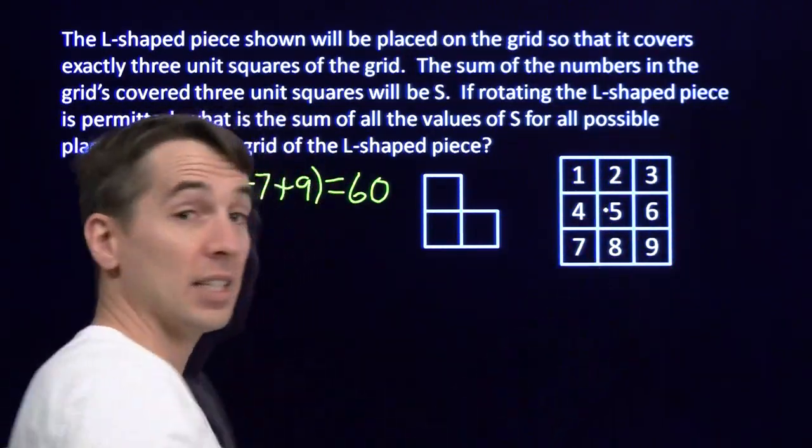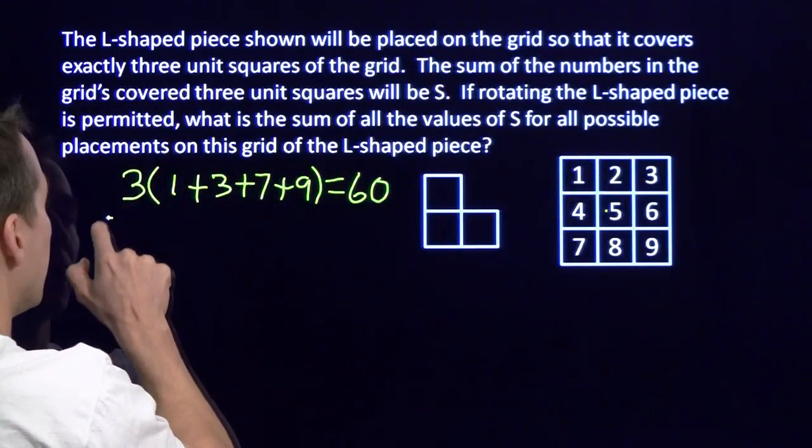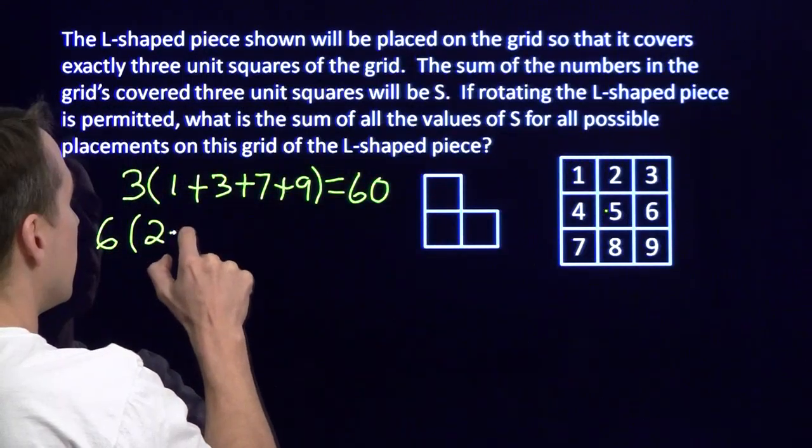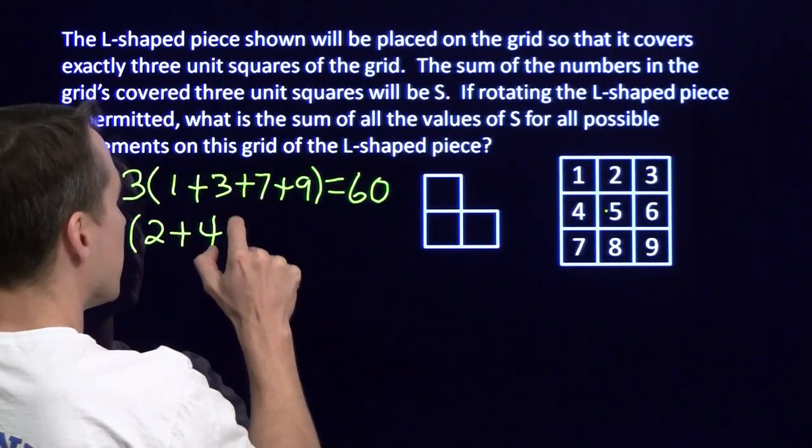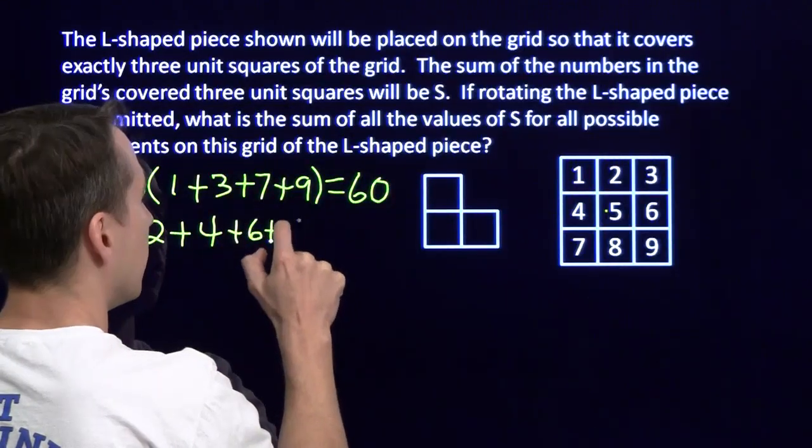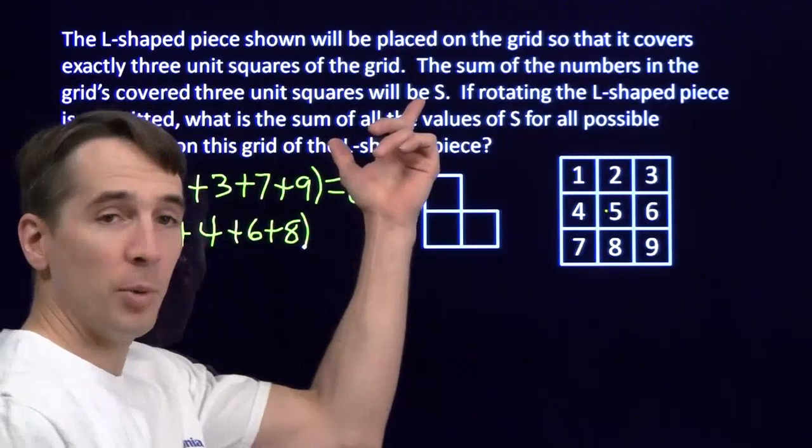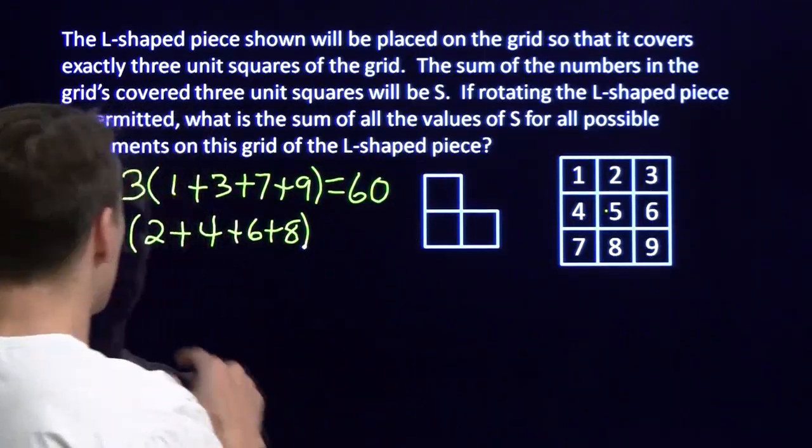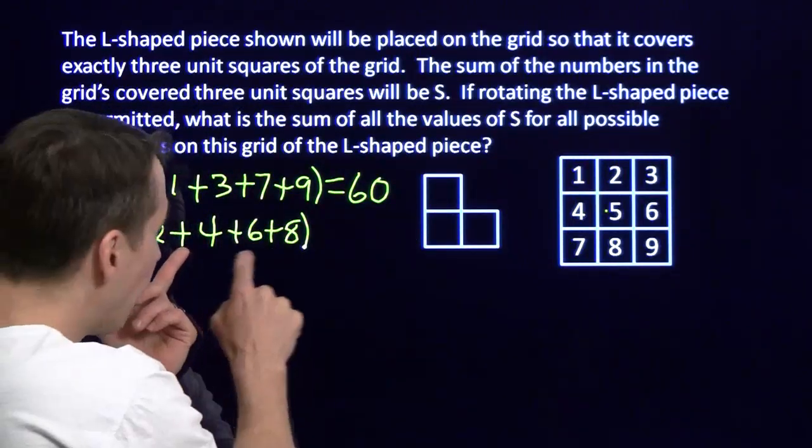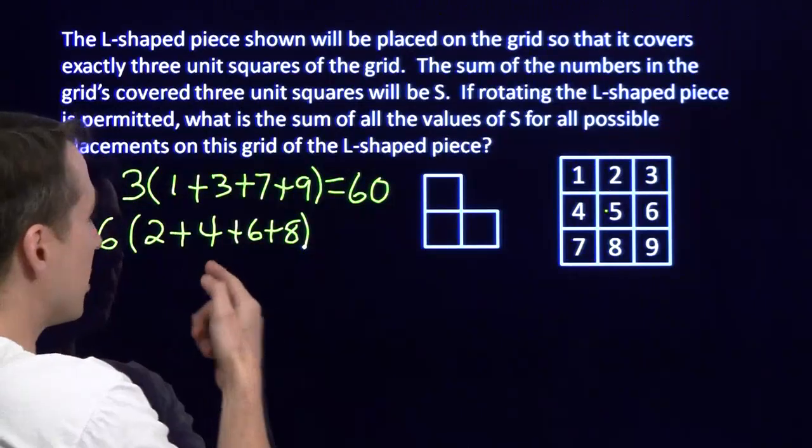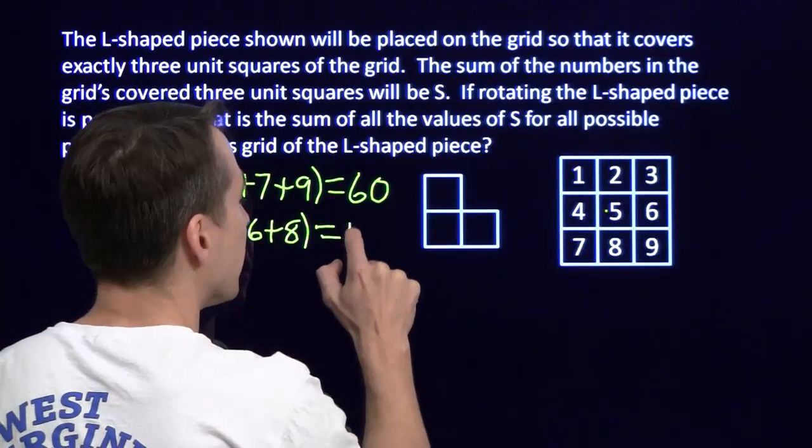So we're going to have 6 times 2 plus 4 plus 6 plus 8, because each of these numbers is going to pop up in one of these S's 6 times. 2 plus 8 is 10, 4 plus 6 is also 10. This is 6 times 20, that's 120.